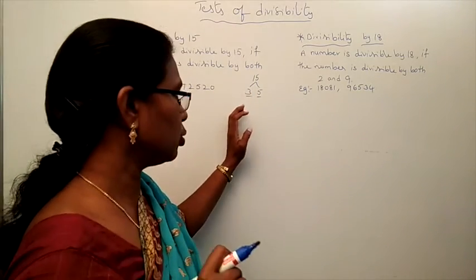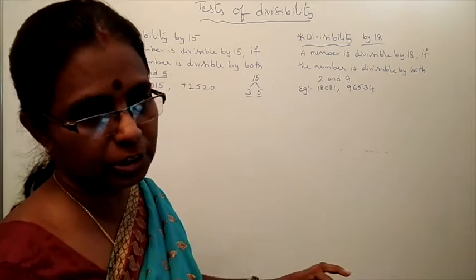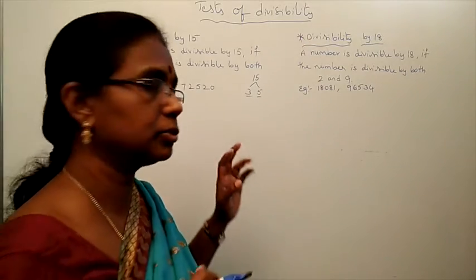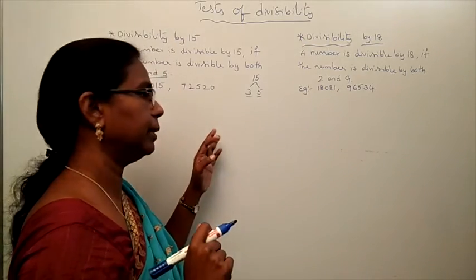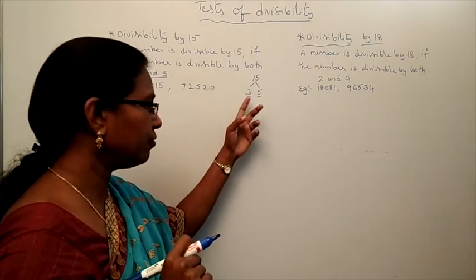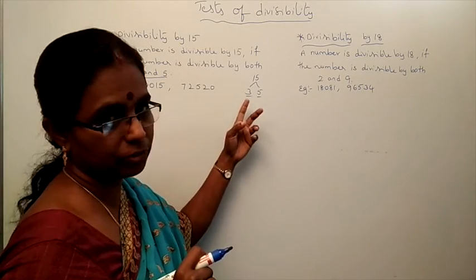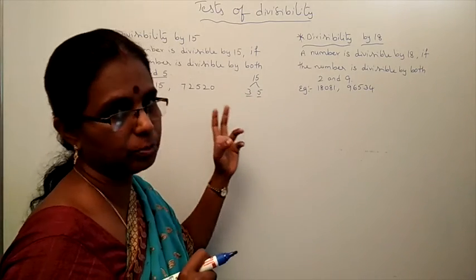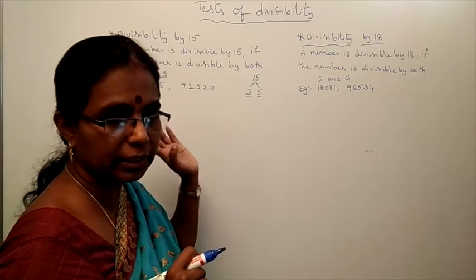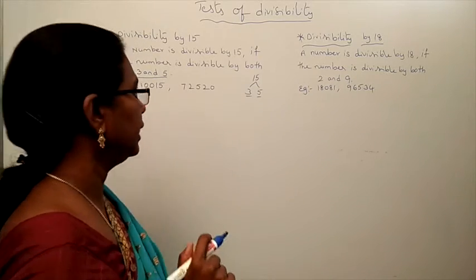If 3 is divisible but 5 is not divisible, then it is also not divisible by 15. Both 3 and 5 should be divisible by that number. Then only that number is divisible by 15.